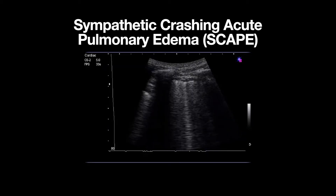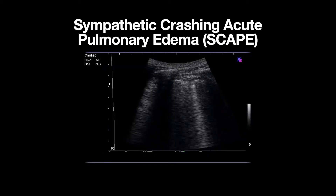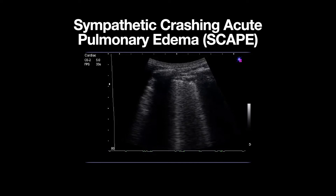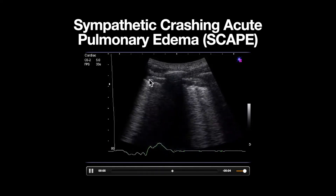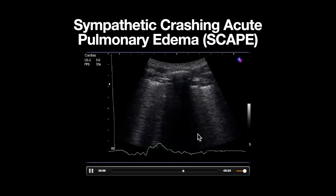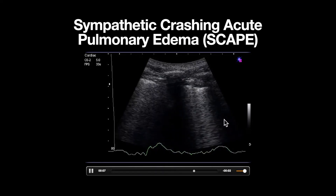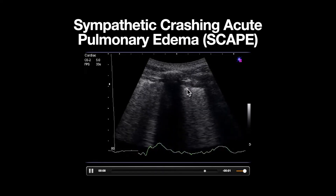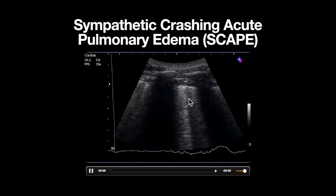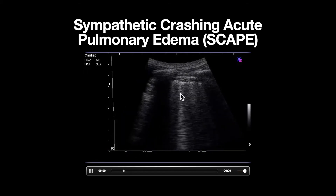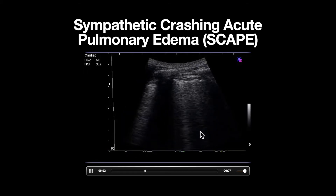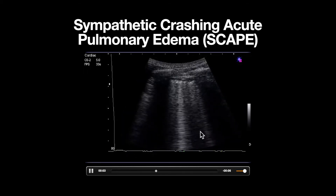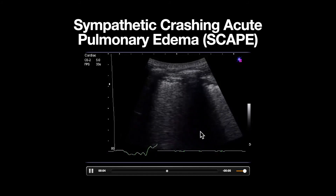An exemplary image of the patient's lungs can be seen here. We have rib shadow, and our pleural line can be seen here with diffuse B-lines seen throughout multiple intercostal spaces, suggesting an interstitial syndrome.